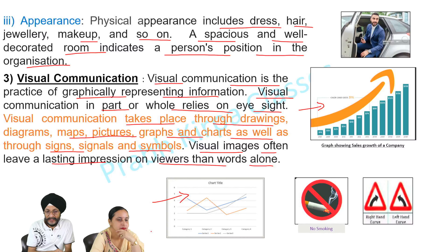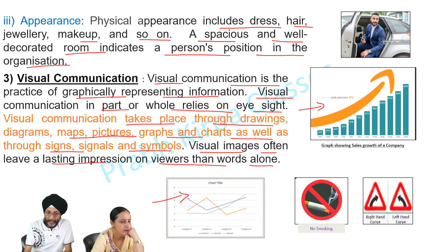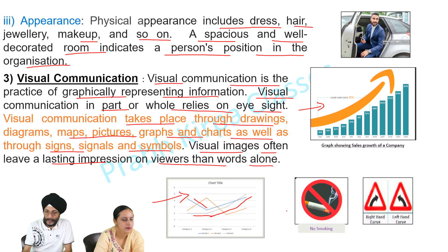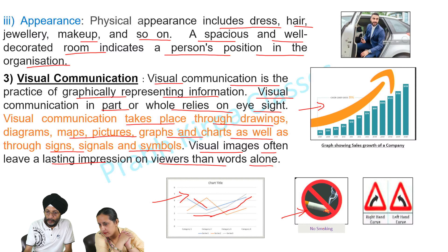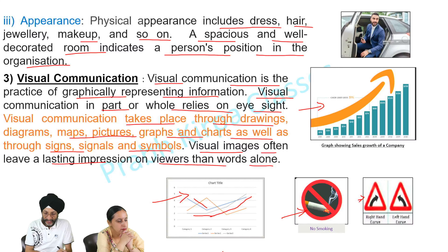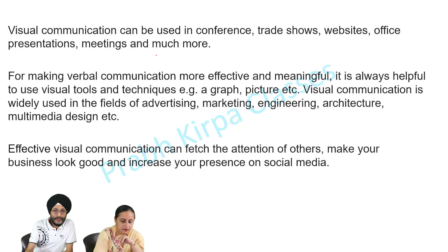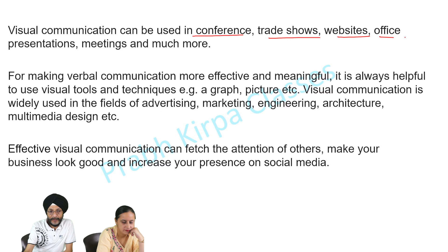Here you can see a chart showing the sales position of three different types of products, where the sales of some are decreasing while others are increasing slowly. In this picture, you can see a sign indicating no smoking. Similarly, other signals on the roadside also communicate something to us. Visual communication can be used in conferences, trade shows, websites, office presentations, meetings, and much more.